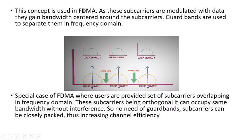This concept is used along with FDMA. The data signals modulate several subcarriers of lesser bandwidth. They gain bandwidth centered around the subcarriers, and guard bands can be used to separate them in the frequency domain. In orthogonal frequency division multiple access, users are provided with a set of subcarriers overlapping in frequency domain. Why overlapping? Because the subcarriers are orthogonal, they do not employ guard bands — they can occupy the same bandwidth without interference.